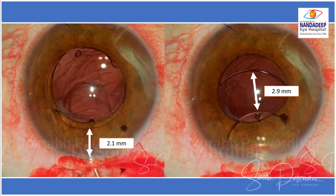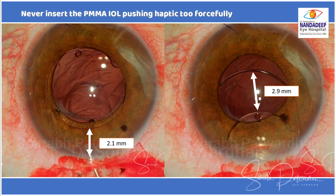Now let's think about why this IOL was decentered. I measured it — one haptic is 2.1mm away from the optic while the other side is 2.9mm. This indicates that while inserting this PMMA IOL, many surgeons push the IOL using the haptic, which can lead to a little bit of kinking of the haptic. On one side the haptic is bent and may not be easily detectable unless you actually measure the haptic position from the optic. Here it's clearly visible that on one side the haptic is much closer to the optic compared to the other side.